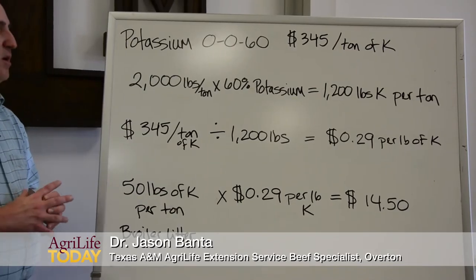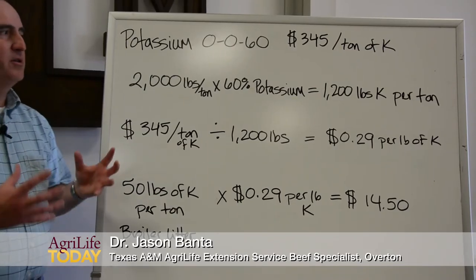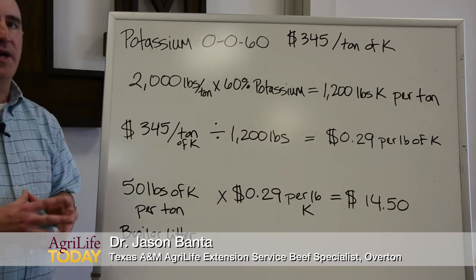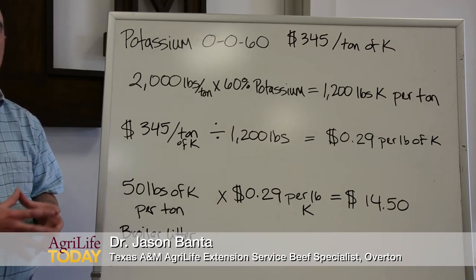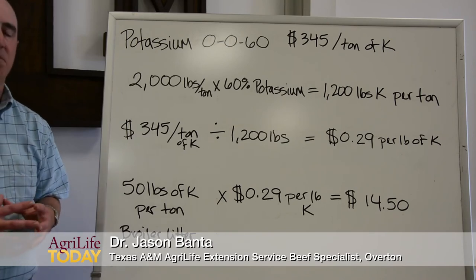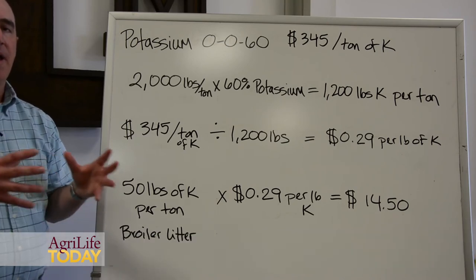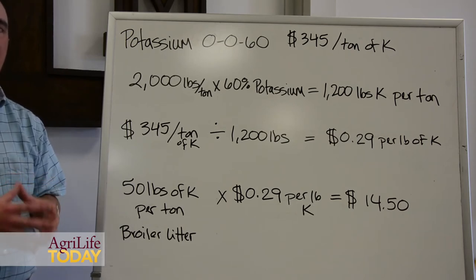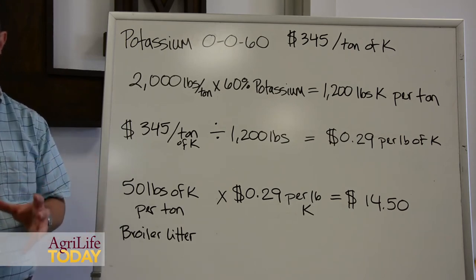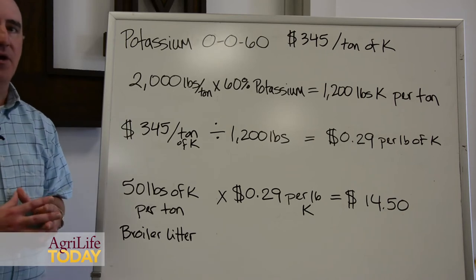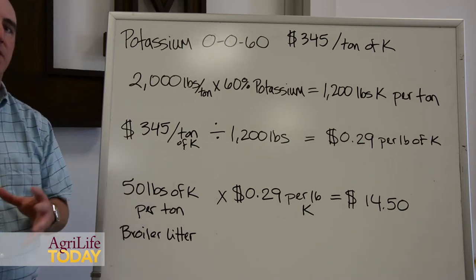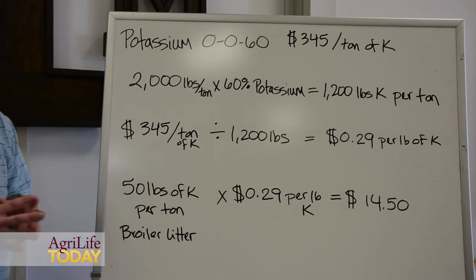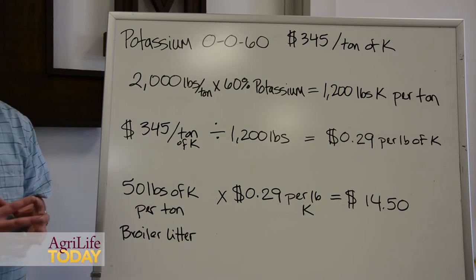So we've been talking about determining the potential value of poultry litter. The way we do that is to get an estimate of what the nitrogen, phosphorus, and potassium content is per ton, and then use traditional fertilizers to calculate a price per pound of nitrogen, phosphorus, and potassium. We've just looked at how to do that with nitrogen; you would want to do the same thing for phosphorus. Now we're going to look at how we do that for potassium.